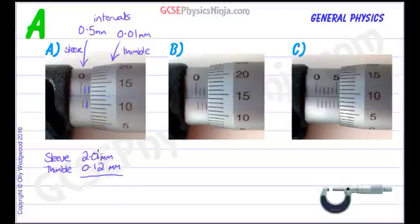Then we just add them up. So if we put another 0 in there, we've got 2, 1, 2. 2.12 millimeters. That's the reading for this first object that we're measuring.